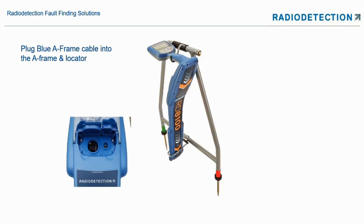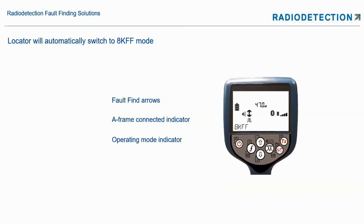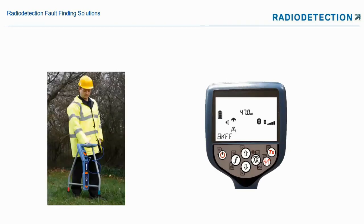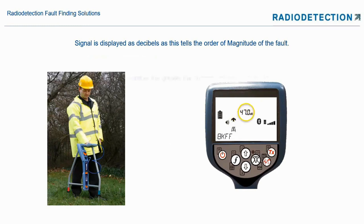Plug the airframe into the locator in the accessory socket on the front, and the screen will go directly to the 8 kHz fault find screen. On there we have our fault find arrows which tell us to go forward or backwards, our airframe connected indicator, and our operating mode. We can also switch to any of our CD frequencies with the 8200. The signal is displayed as decibels at the top of the screen, which tells us the magnitude of the fault — the higher the number, the greater the current leaking out of the fault.